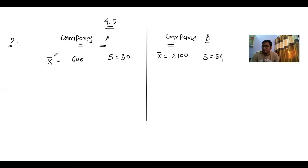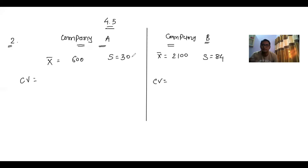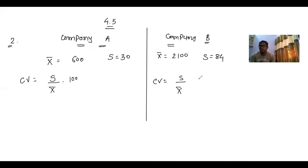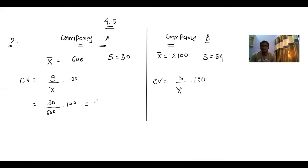To compare two companies, organizations, or students, we use the Coefficient of Variation (CV). The formula is: CV = (s / x̄) × 100. For Company A: s is 30, x̄ is 600, so CV = (30 / 600) × 100 = 5 percent.